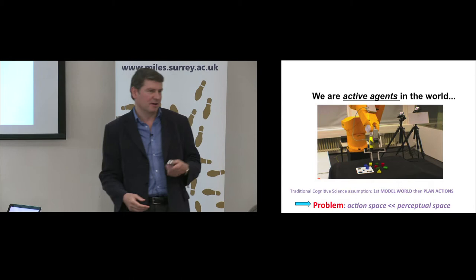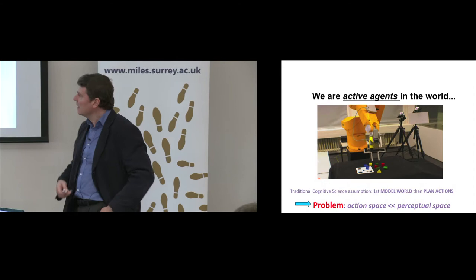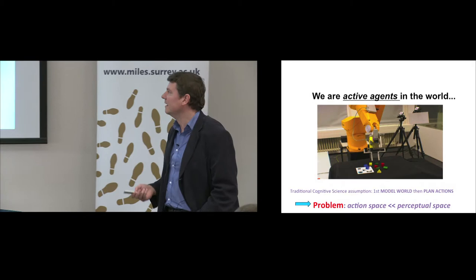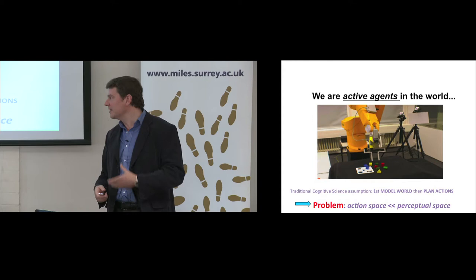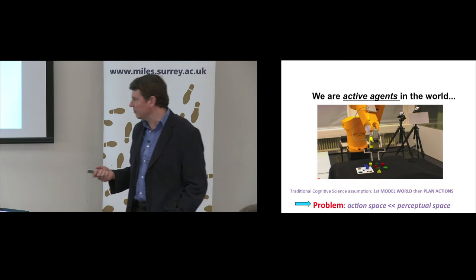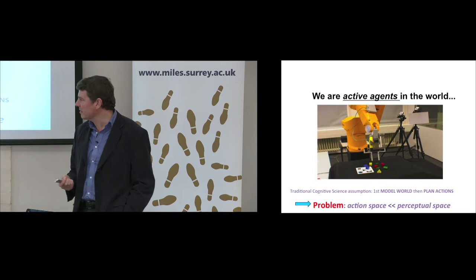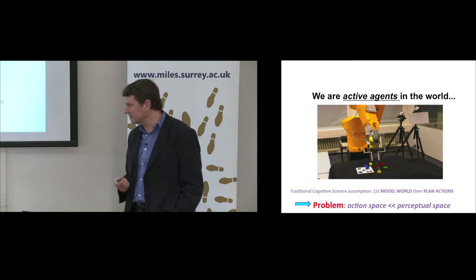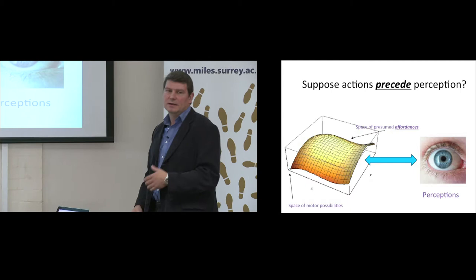It's clear that there is a very fundamental link between perceptions and actions. This is something we found to be particularly useful in cognitive robotics, where the traditional model is that you form a model of the world and then plan actions within it. But there's a big problem with that: the action space of a robot — its motor possibilities — is typically very much smaller than the space of perceptual possibilities, which leads to problems like symbol grounding and a lot of redundancy.